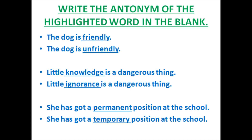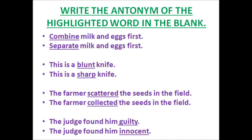The next sentence is: she has got a permanent position at the school. So the opposite of permanent is temporary. Correct. So the answer is: she has got a temporary position at the school. The next sentence is: combine milk and eggs first. So the opposite of combine is separate. So the answer is: separate milk and eggs first. The next sentence is: this is a blunt knife. So the opposite of blunt — very easy children — sharp. So the answer is: this is a sharp knife.